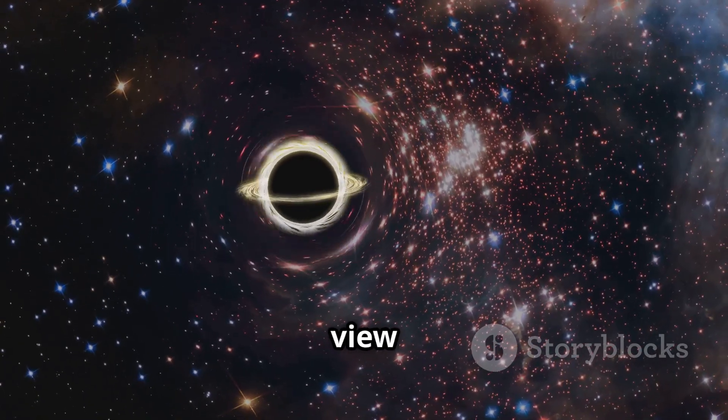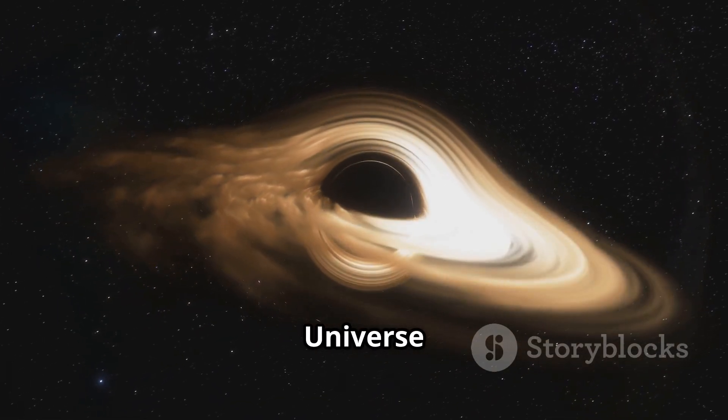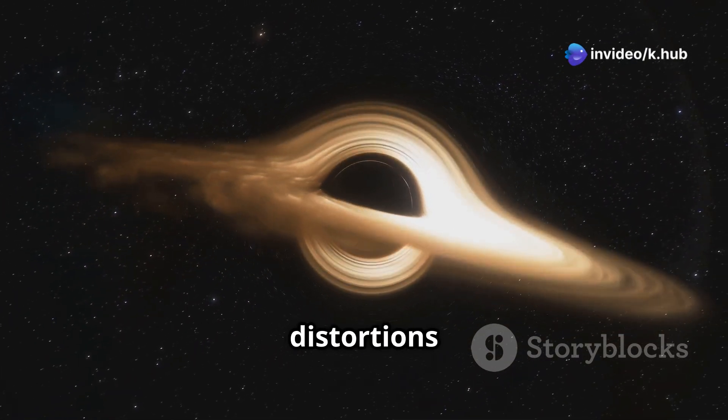Inside a black hole, our view of the universe would be completely different. A warped universe. The intense gravitational lensing would make light bend around us, creating strange distortions.